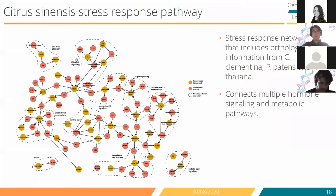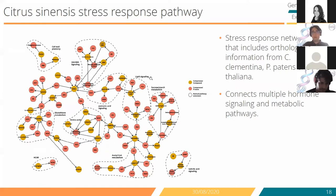We also created a Cytosineensis stress response pathway — Cytosineensis being a non-model organism — and included it in parallel with other model organisms such as Arabidopsis thaliana. We can see that most of the stress response pathways present here are hormone signaling pathways, lipid signaling, as well as metabolic parts of the plant involved in stress response, including sucrose stress metabolism.